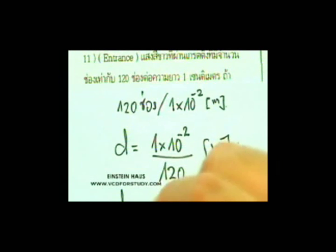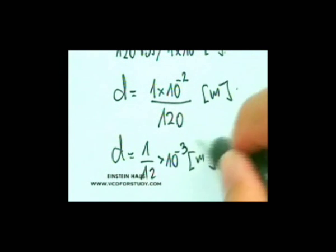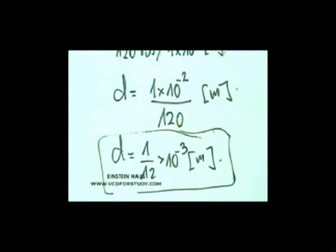ในหน่วยเมตรก็คือ 1/120 คูณ 10 ลบ 2 เมตร ก็ได้ระยะ d นี่คือระยะ d ที่ได้แล้ว จดเก็บไว้ ต่อไปถ้าให้แสงสีเขียว 500 นาโนเมตร ก็จะนำค่านี้ไปคำนวณต่อครับ